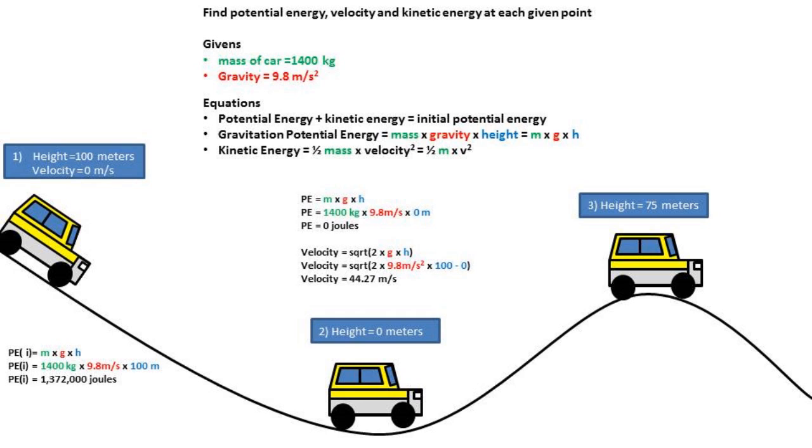If you are like me and think in imperial, this equals about 99 miles per hour. To find the kinetic energy at this point, we take the initial potential energy minus this point's potential energy, and we end up with the same kinetic energy as our initial potential energy.